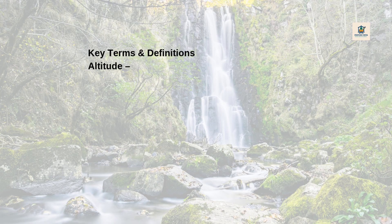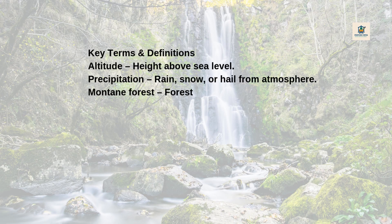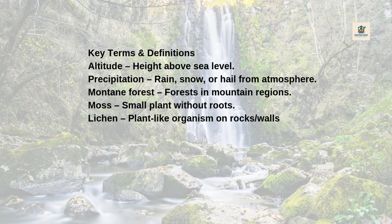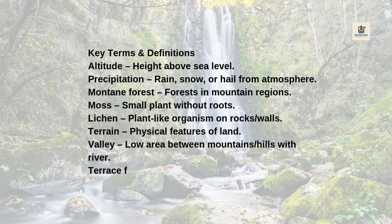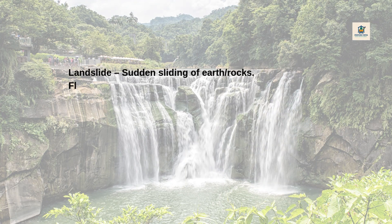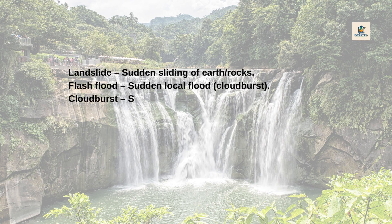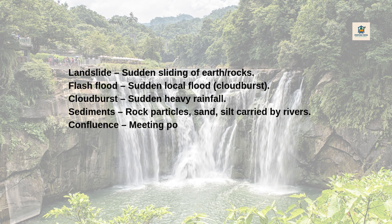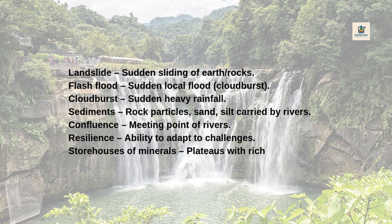Key terms: Altitude — height above sea level. Precipitation — rain, snow, or hail from the atmosphere. Montane forest — forests in mountain regions. Moss — small plant without roots. Lichen — plant-like organism on rocks and walls. Terrain — physical features of land. Valley — low area between mountains or hills with a river. Terrace farming — farming on step-like slopes. Avalanche — sudden fall of snow, ice, rocks. Landslide — sudden sliding of earth and rocks. Flash flood — sudden local flood caused by a cloudburst. Cloudburst — sudden heavy rainfall. Sediments — rock particles, sand, silt carried by rivers. Confluence — meeting point of rivers. Resilience — ability to adapt to challenges. Storehouses — plateaus with rich mineral deposits.